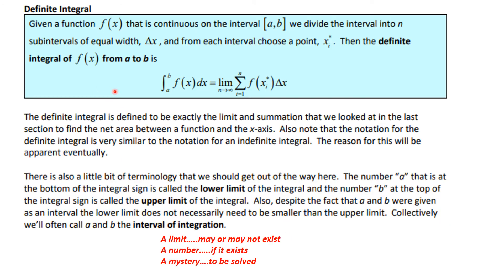Okay so that motivates finally our definition of the definite integral. Given a function f(x) that is continuous on the interval a b we divide the interval into n subintervals of equal length delta x just like we were doing and from each interval we choose a point x sub i star. Then the definite integral of f(x) from a to b is and here's the symbol and that's the way you read it. The definite integral from a to b of f(x) dx with respect to x is equal to the limit as n goes to infinity of those sums. And that limit has to be independent of which i's we pick. So you see this is exactly the limit that represents the net area. And we have some terminology here. The number a is called the lower limit of the integral. The number b is called the upper limit and a to b is called the interval of integration.